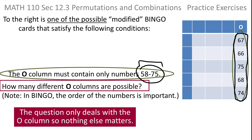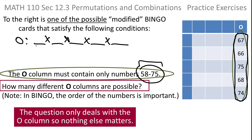Think about it this way: if you took your O column and just turned it into a row, you've got to fill this spot, this spot, this spot, this spot, and this spot — five positions. So really it's a fundamental counting principle problem. Find how many ways you can fill the first spot and multiply it by how many ways to fill the second spot, and go all the way down the line. The product of those will be the answer.